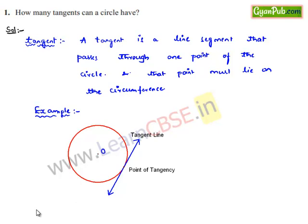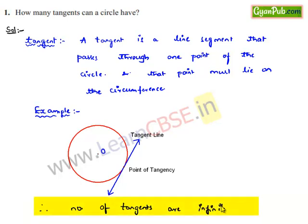Therefore, we can say the number of tangents to any circle are infinite, as there exist an infinite number of points on the circumference of the circle.